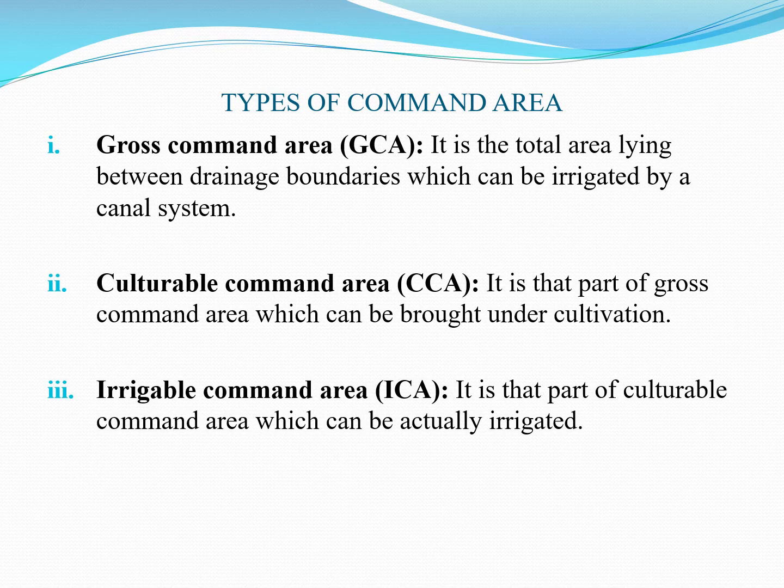The third type is irrigable command area. This is that part of culturable command area which can be actually irrigated.